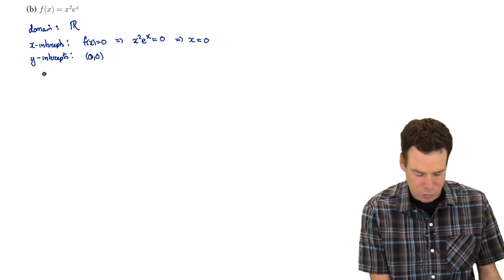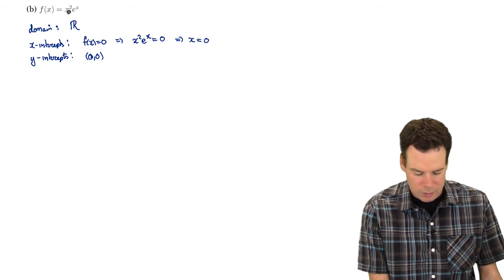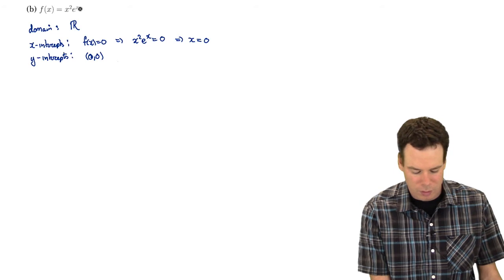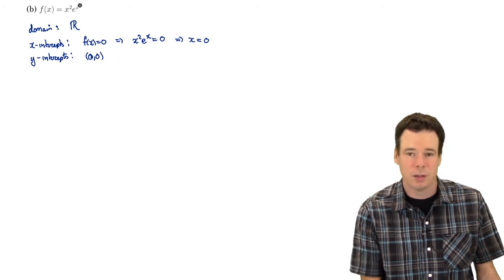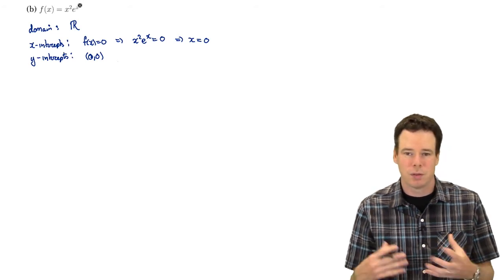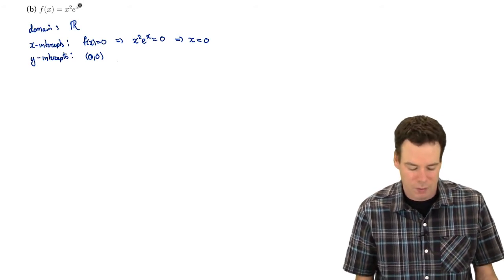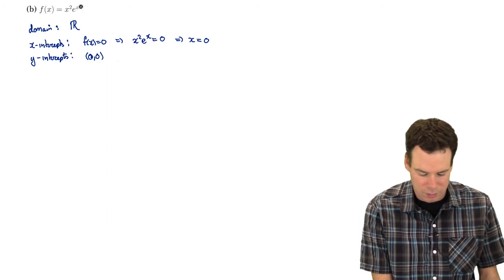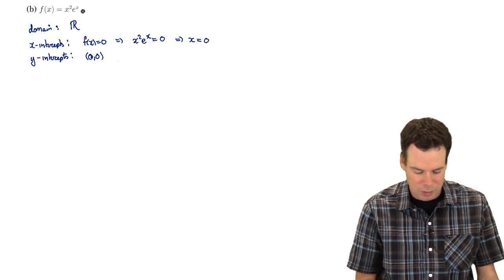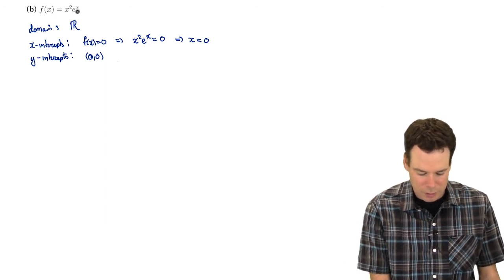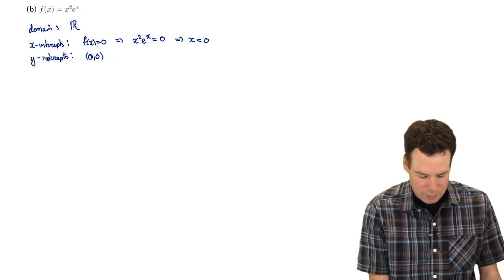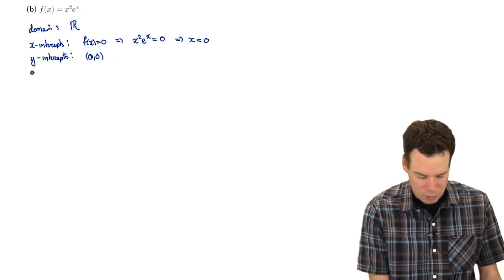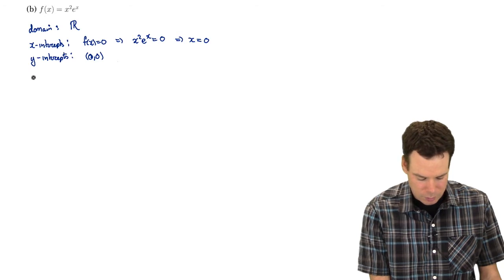Is there any symmetry to this? There's no odd or even symmetry because we've got an x² here but also an x in the exponent, so there's a mix of odd and even powers of x — it doesn't have odd or even symmetry. There's no periodic symmetry either, so we have no symmetry to worry about here.